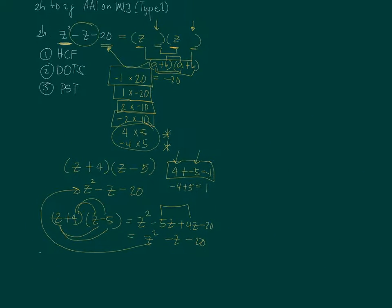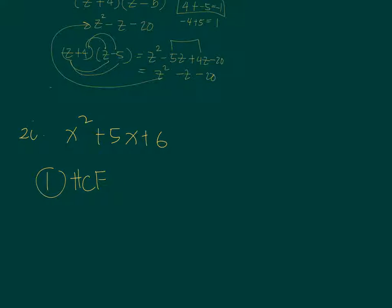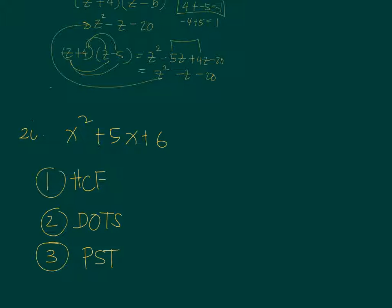Now let's look at a different one, but it follows the same format. In 2I, we have x squared plus 5x plus 6. Do we factor using the highest common factor? No, because the last term has no x. Is it a difference of two squares? It's a trinomial, so no. Is it a perfect square trinomial? The first term is a perfect square, but 6 is not a perfect square, so it's not a PST.